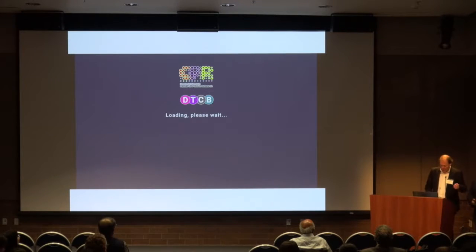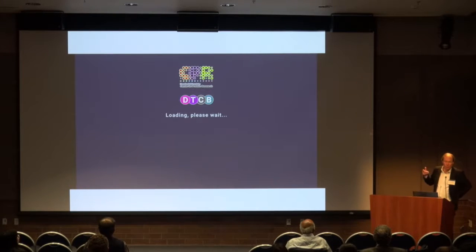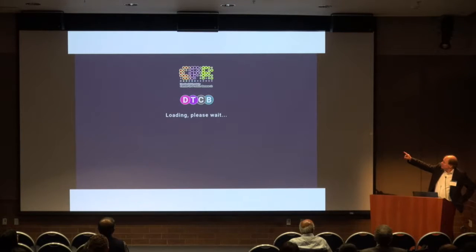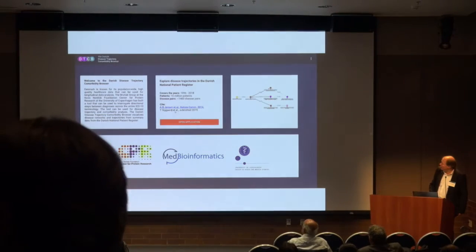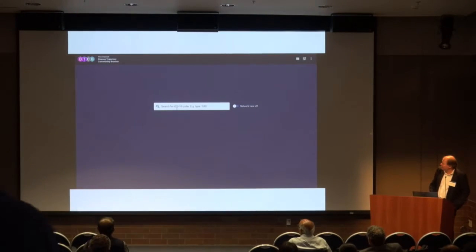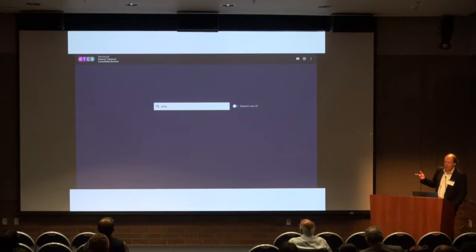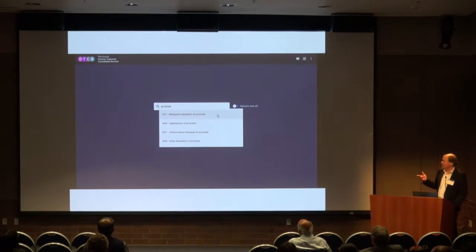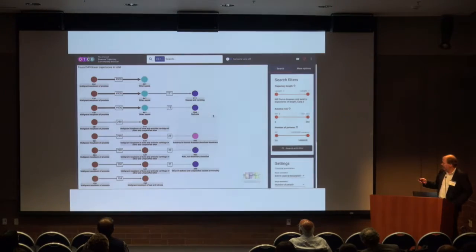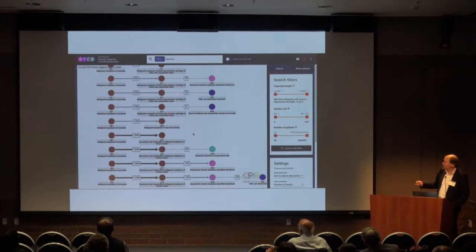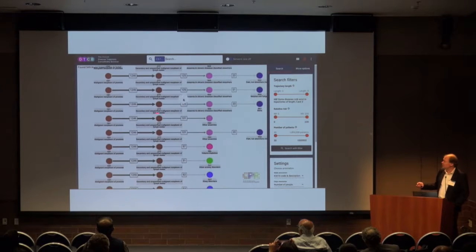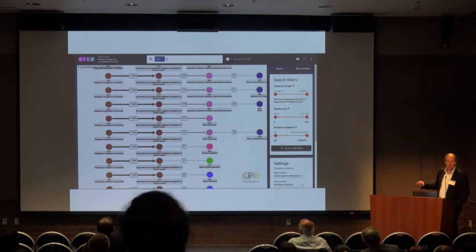It's just a one-minute video to see what you can do with this tool when we release it very soon. It's the Danish Disease Trajectory Comorbidity Browser. It starts up and you simply plug in codes or text, and it will pull up codes for you, then start pulling out the linear trajectories that are based on pre-computed data.